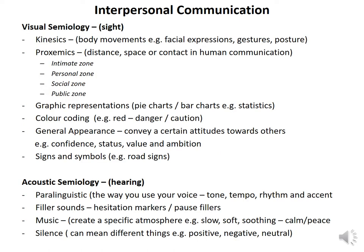There is also visual simulogy, where your eyesight must be good in order to see the body movements of the other person. When we talk about kinestics — body movements — it refers to your facial expressions. When you are frowning, you are not happy, or you are not sure of what the person is saying. Your gestures and your postures as well — the way that you sit also conveys a certain meaning.